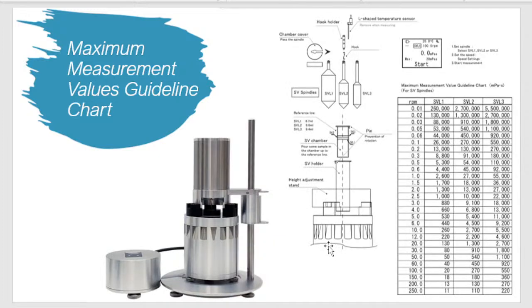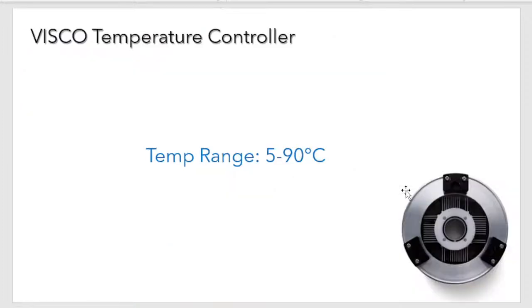For the VSCO BL benchtop viscometer, you would use a similar table. It also has three spindles — SVL1, SVL2, and SVL3 — and different RPMs. Similarly, if you're looking at 10,000 cP, you would likely choose the SVL2 spindle at 2.5 RPM.